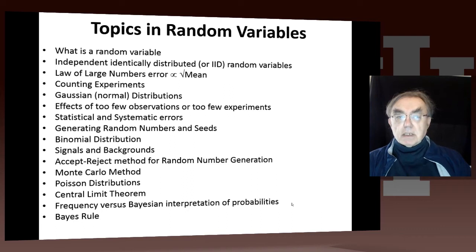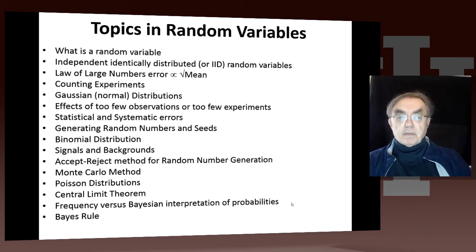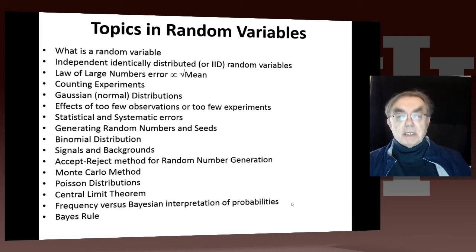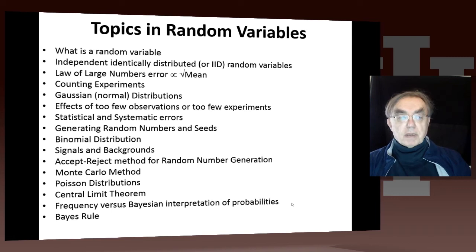At the end of this, you can say you've learned what a random variable is. You will have been introduced to independently, identically distributed random variables, which are what you get in physics — because when particles collide, for two protons collide, each event is independent, coming from the quantum mechanical underpinnings of those collisions. Then we have something pretty important: the law of large numbers, that the error is proportional to the square root of the mean.